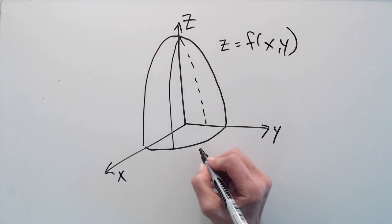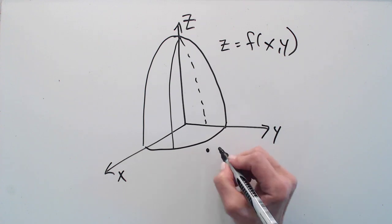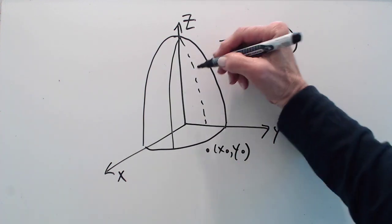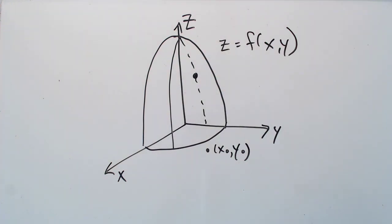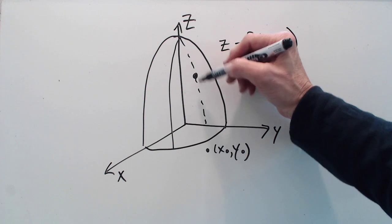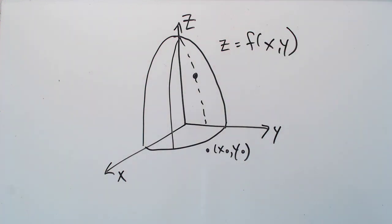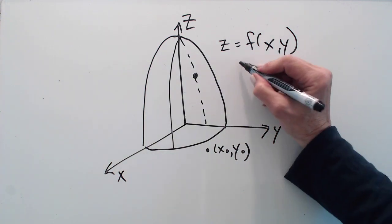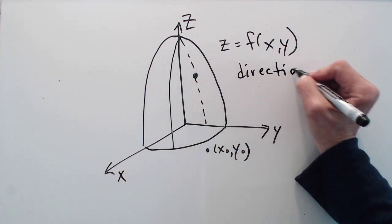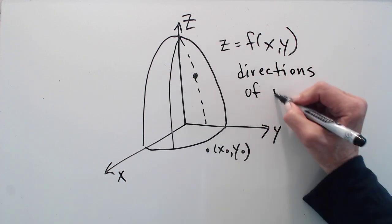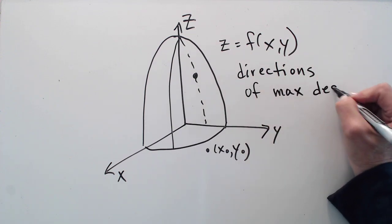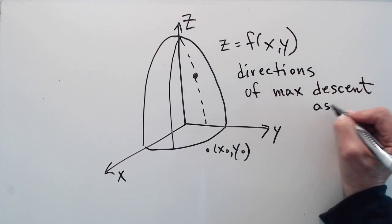So now we have a function of two variables. Let's take a point down here, let's take a point x-naught, y-naught and plot that point on our surface. Now it is a natural question to ask, in which direction should we go so that the rate of change along this curve is going to be the greatest or the least?